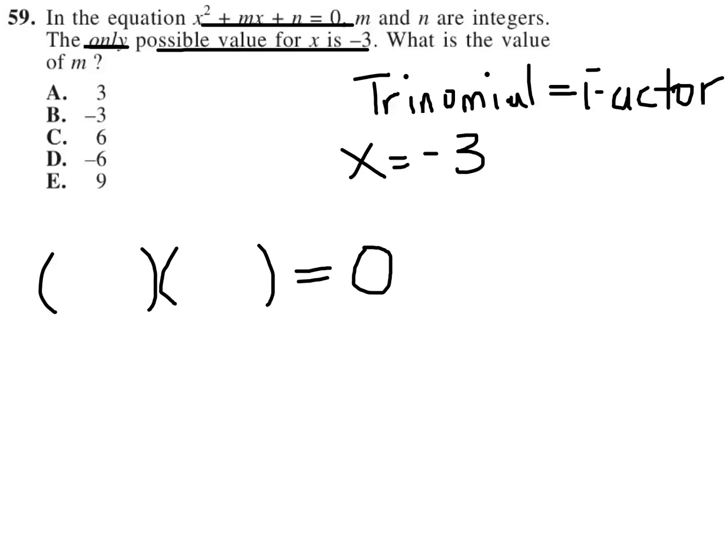We know that because the question says that the only possible answer for x is negative 3, that means that both binomials in the parentheses must be x plus 3. That is all that it can be.